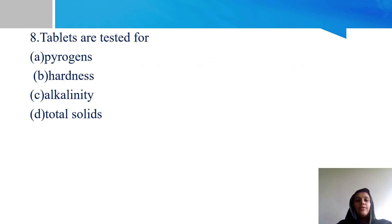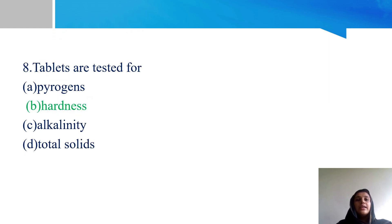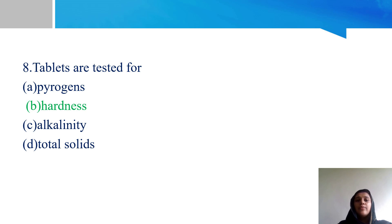Next question: tablets are tested for options A - pyrogens, B - hardness, C - alkalinity, and D - total solids. Option B - hardness - is the right answer. Hardness determines the mechanical strength or crushing strength of the tablet. It measures resistance force on the tablet, expressed in kg, and is used to test strength.